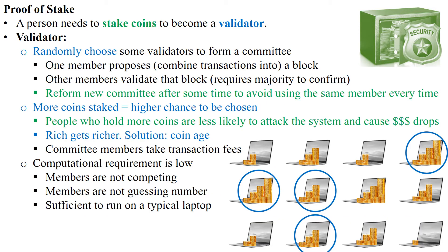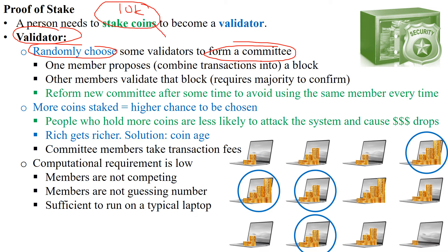Once you've staked your coins, validators will be chosen randomly to form a committee. For example, out of 10,000 people who have staked their coins, 128 people will be chosen as validators to form the committee. Out of those 128 committee members, one member will propose — meaning they combine transactions into a block.